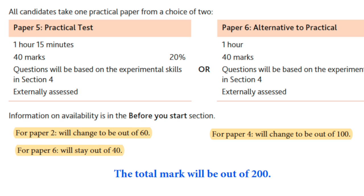When you get your certificate, your marks will be out of 200 instead of 160. The conversion works like this: paper two has a 30% load, so its 40 marks becomes 60 out of 200. Paper four has a 50% load, so its 80 marks becomes 100 out of 200. Paper six stays as 40 marks — which represents 20% out of 200. All your marks are then converted to a total out of 200.